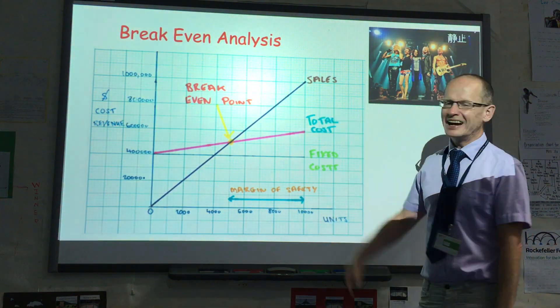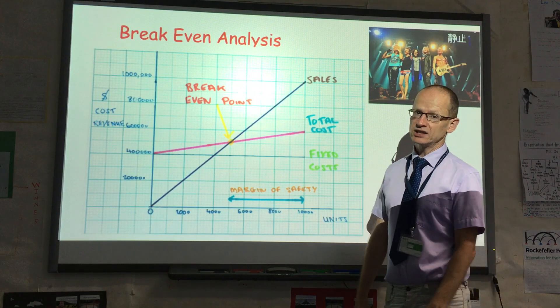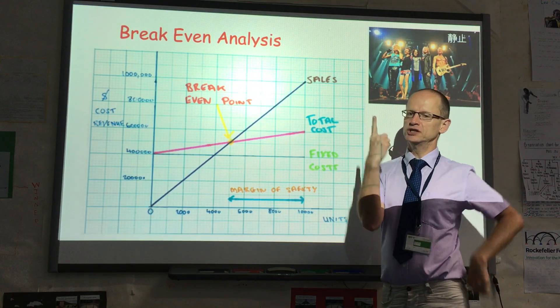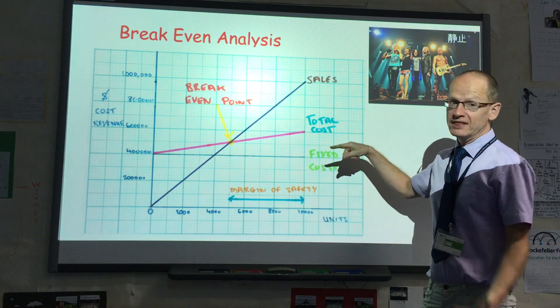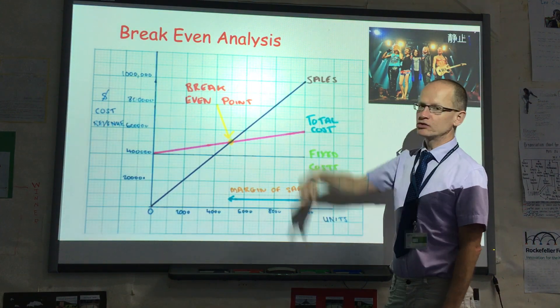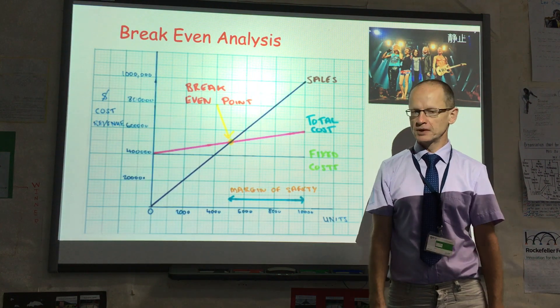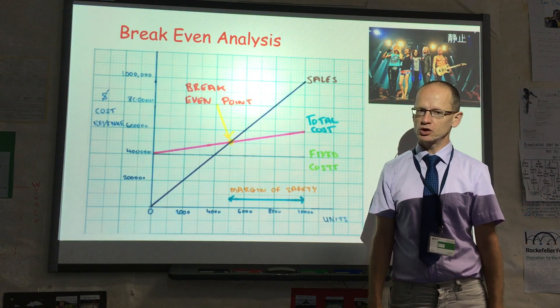Now, if the break-even point was 9,999 tickets, obviously then the margin of safety would be one, which would not be good. So in that case, obviously you have to try and increase the selling price or reduce some of the costs, but it may not be possible to reduce the costs.